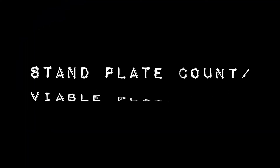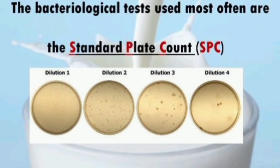Standard plate count or viable plate count — this test examines the viable count of bacteria present in the milk. It gives a rough and direct assessment of the viable number of bacteria and is a very simple method to carry out.